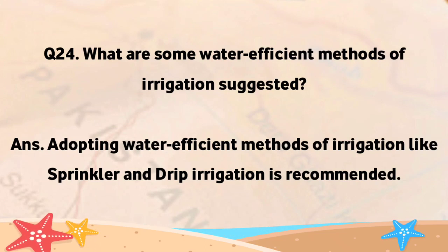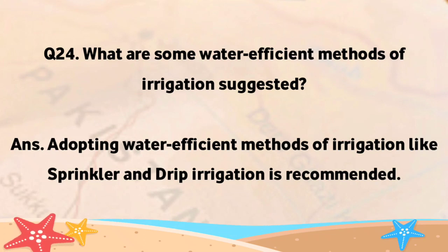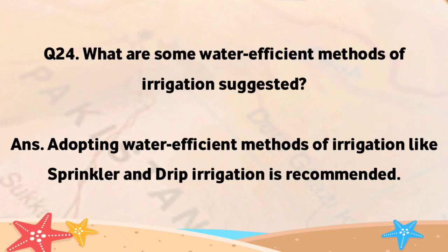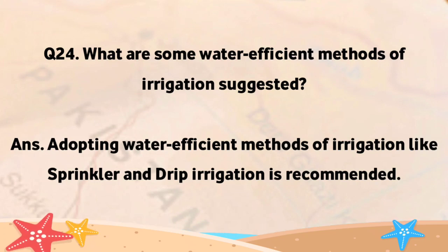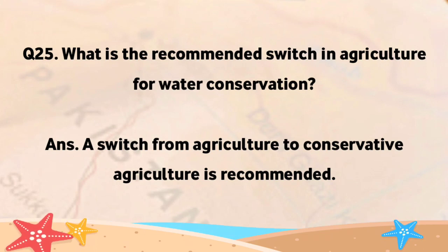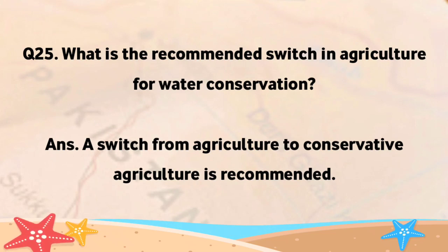What are some water-efficient methods of irrigation suggested? Adopting water-efficient methods of irrigation like sprinkler and drip irrigation is recommended. A switch from conventional agriculture to conservative agriculture is also recommended for water conservation.